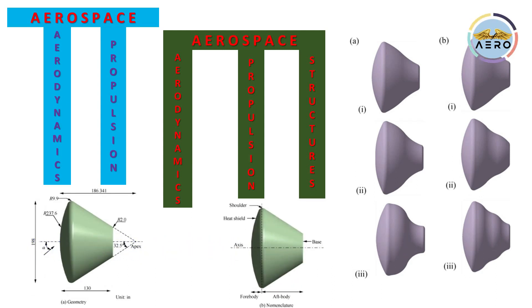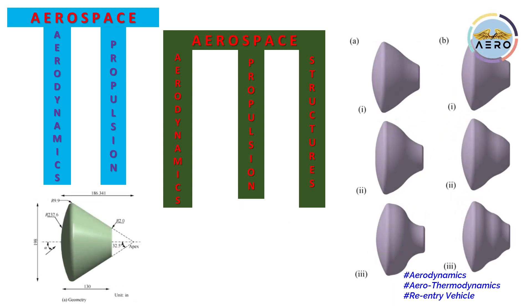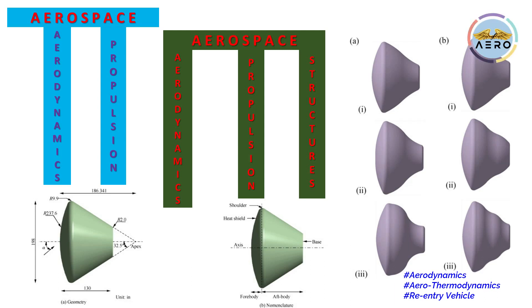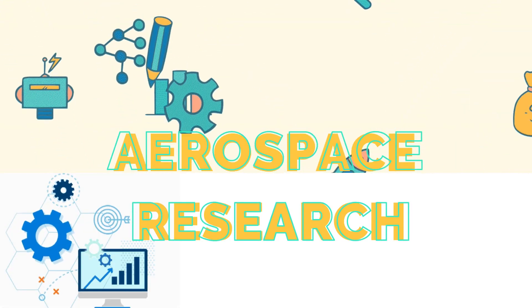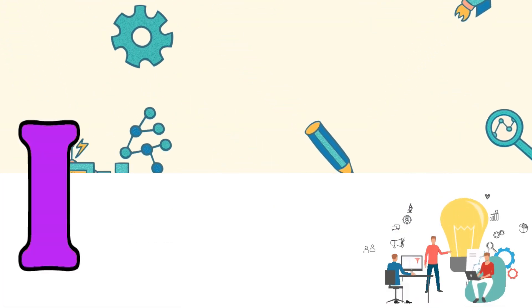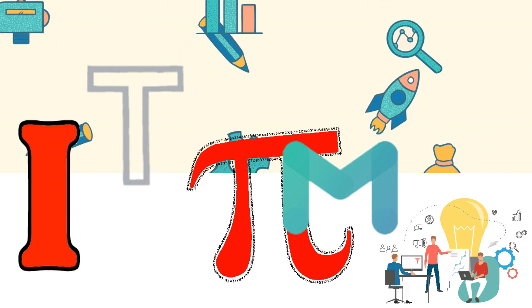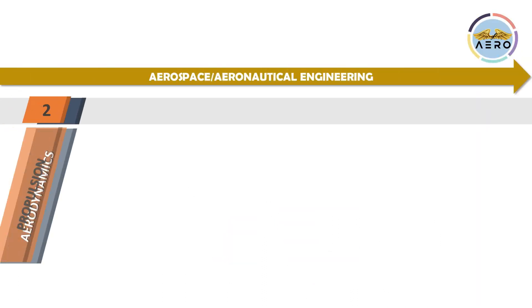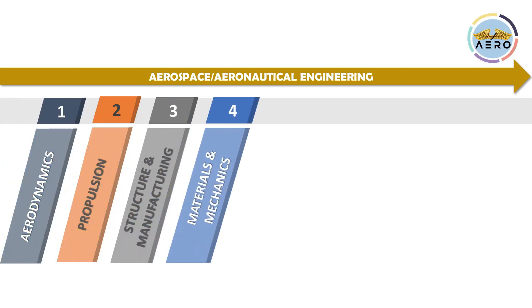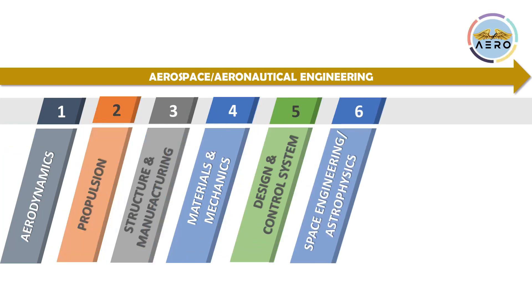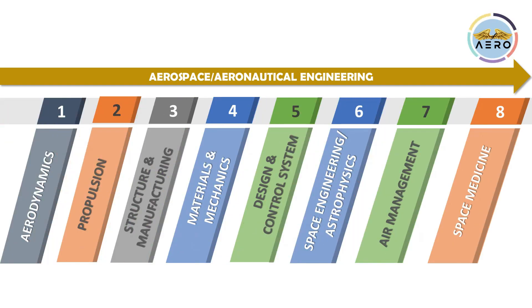Pi and M-shaped professionals compile a combination of domains — for example, aerodynamics and aerothermodynamics of a re-entry vehicle, requiring knowledge of both aerodynamics and propulsion. Today I will discuss possible aerospace research topics based on I, T, Pi, and M-shaped professionals across domains: aerodynamics, propulsion, structures and manufacturing, materials and mechanics, design and control, space engineering, aviation management, and aerospace medicine.